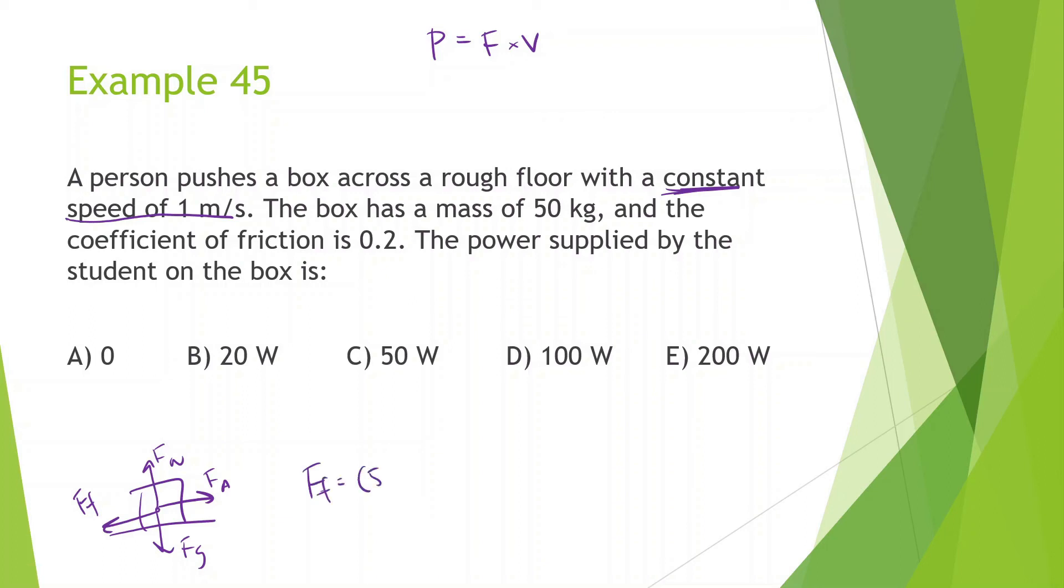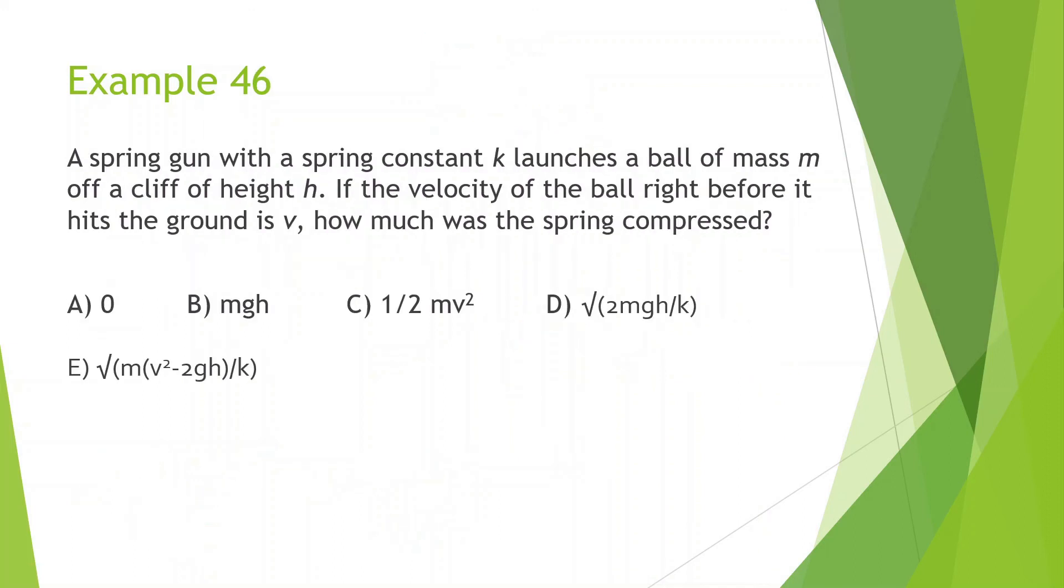So let's figure out what this force of friction is. It's equal to the normal force, which is 50 times 10, so 500, times the coefficient of friction, which is 0.2. Do a little bit of calculations. This is equal to 100 newtons. So we know force of friction is 100, force applied is 100. So now we have power is equal to the force applied, 100, times the velocity, 1, and we get 100 watts.